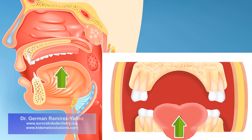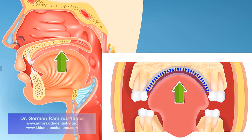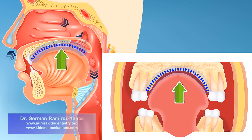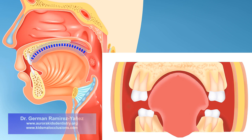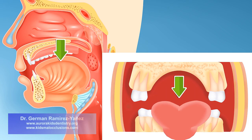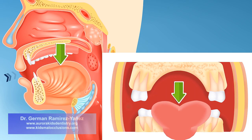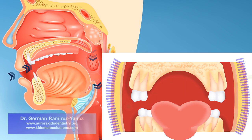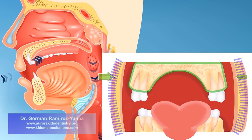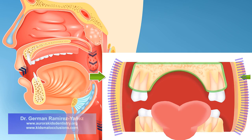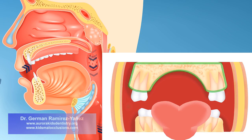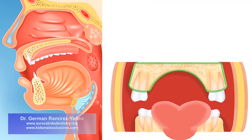Breathing through the nose is the correct way, and so the tongue is able to rest on your palate, stimulating a normal growth and development of your upper jaw. Conversely, when you breathe through your mouth, your tongue has to descend and protrude. At the same time, the pressure of your cheeks increases, pushing the upper jaw inwards, so the growth and development of your upper jaw is negatively affected, resulting in a narrow and high palate.